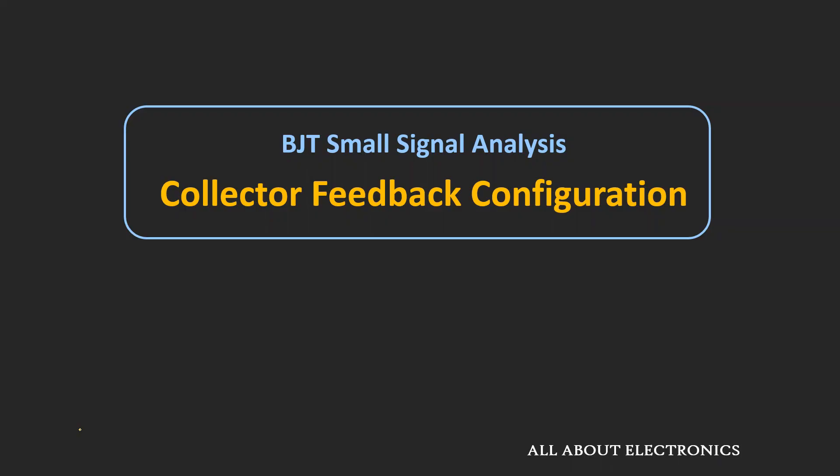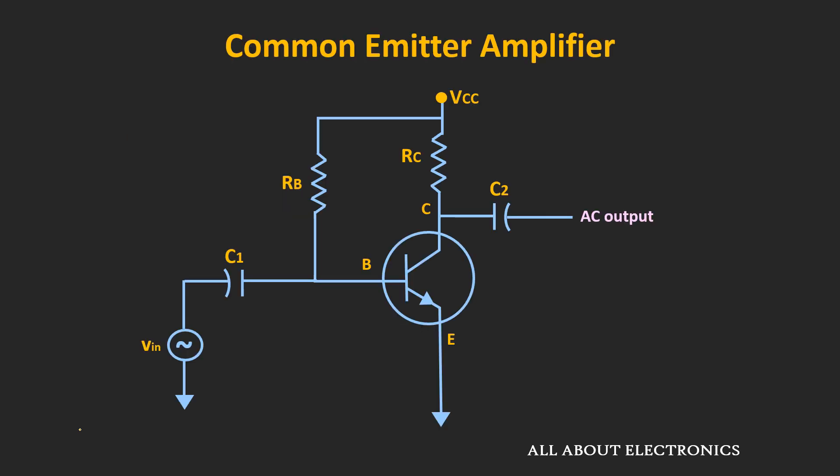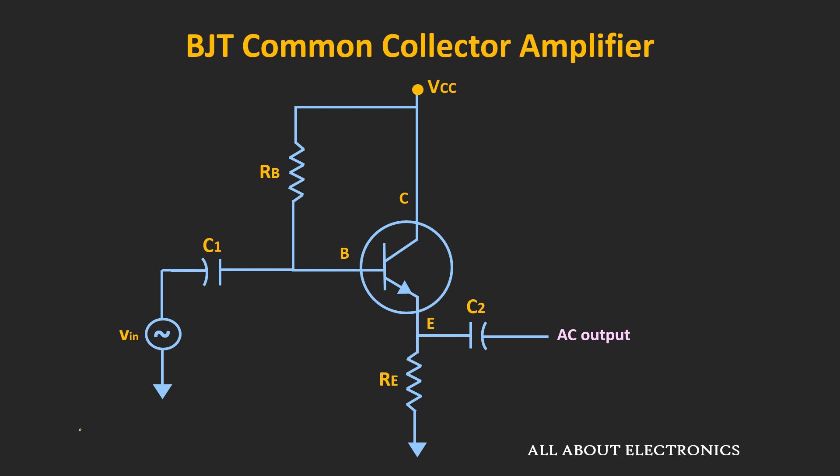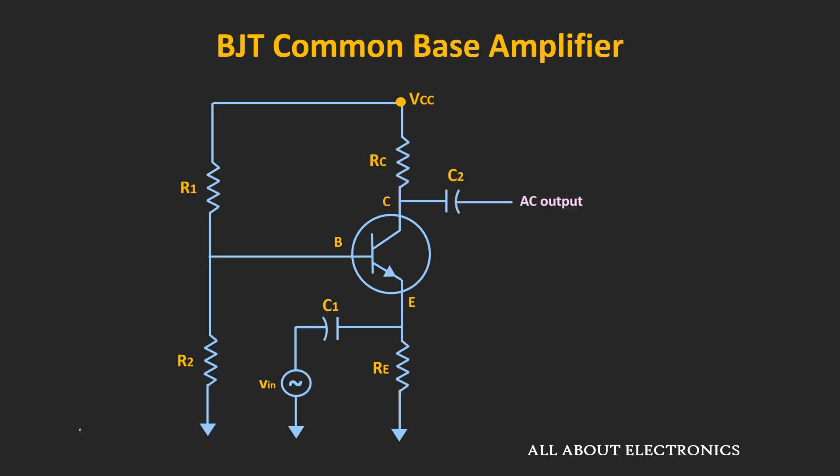Hey friends, welcome to the YouTube channel all about electronics. In the earlier videos on the BJT, we discussed the common emitter, common collector, and the common base amplifiers. We saw how using the small signal analysis we can find different amplifier parameters like the voltage gain, the input and the output impedance. After this discussion, we are in a position to discuss the multistage amplifiers.